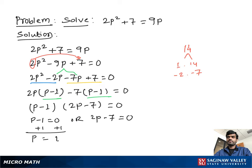For the other equation, we add 7 to both sides, we get 2p equal to 7. Then dividing by 2 on both sides, we get p equal to 7 over 2. So our final answer is p equal to 1 or p equal to 7 over 2.